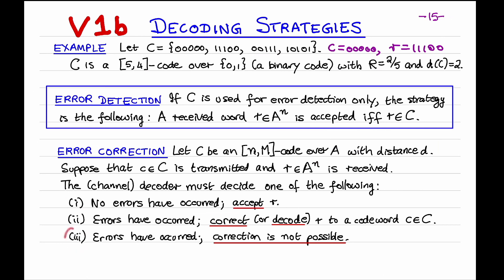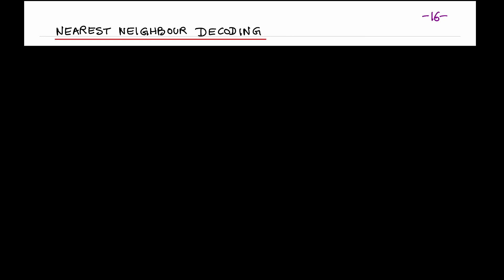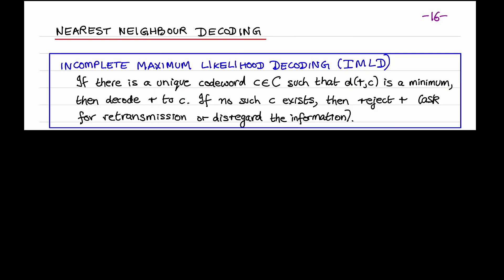The third conclusion the decoder could make is that errors have occurred, but error correction is not possible. A natural decoding strategy is the one we used in the very first lecture when we took a brief look at binary replication codes — that was the nearest neighbor decoding strategy. This strategy comes in two flavors; the first is Incomplete Maximum Likelihood Decoding, or IMLD.